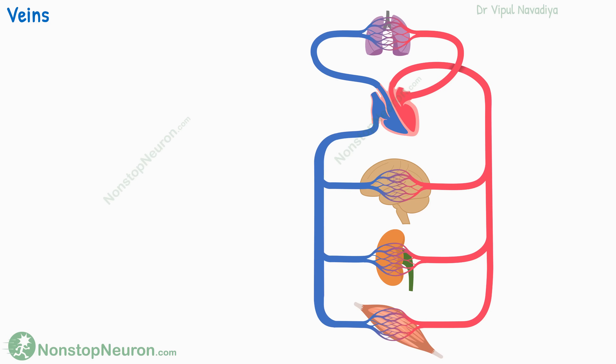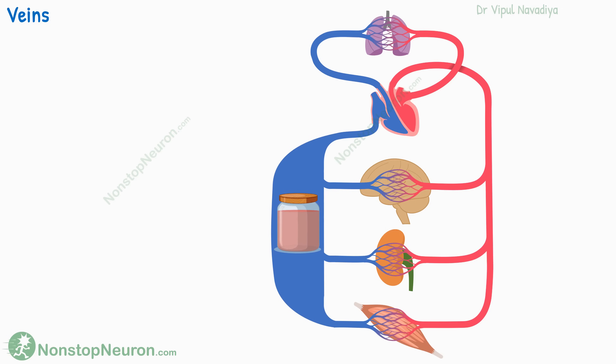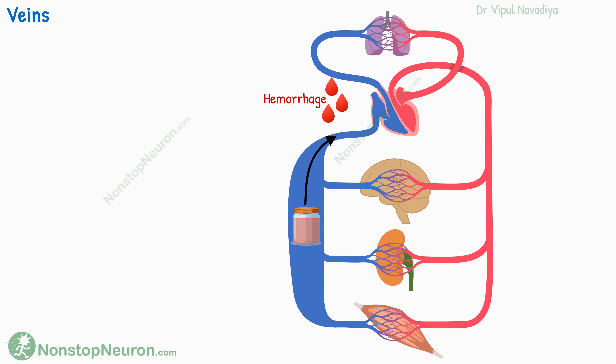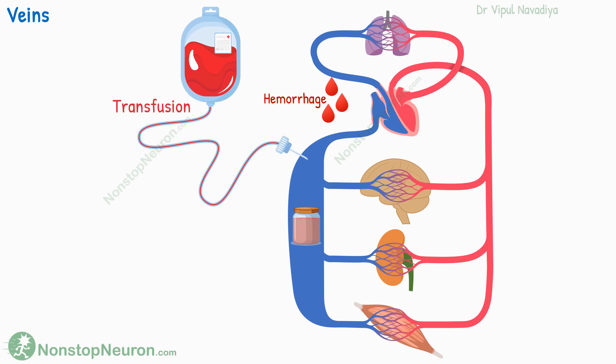Coming to the veins — they can expand much more with minimal rise in pressure, making them a very good storeroom of blood. Collectively, all the veins in the body hold about 3,200 milliliters of blood at a pressure below 15 millimeters of mercury. Most of this blood is in storage. When blood is lost, as in hemorrhage, blood from here is shifted out to maintain normal circulatory function. And if blood is received, as in transfusion, the extra blood can be stored in veins. Thus, high compliance of veins makes them a blood reservoir.